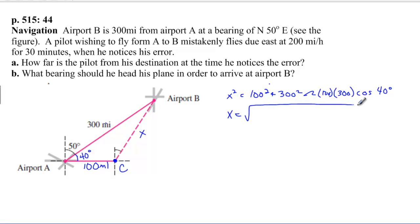So, let me just go ahead and type that into my calculator. And if I were you, I'd plug everything in your calculator at once to minimize rounding error. So, the square root of 100 squared plus 300 squared minus 2 times 100 times 300 times the cosine of 40 degrees.